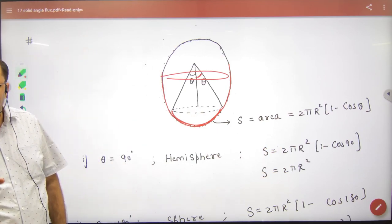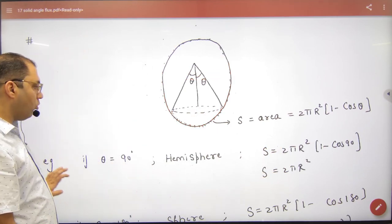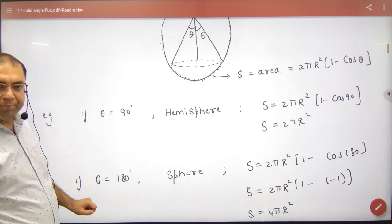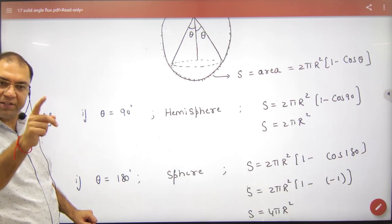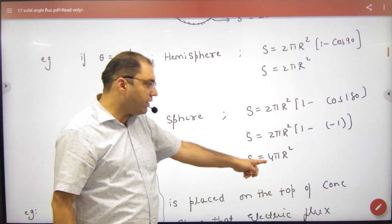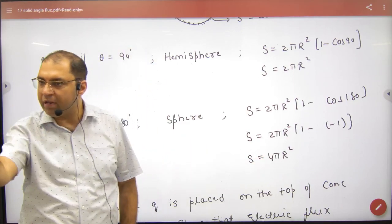And if you put θ = 180°, then both angles give 360°, so what will be the surface area? It will be the full sphere, 4πr². This formula is absolutely correct.